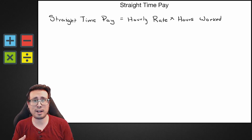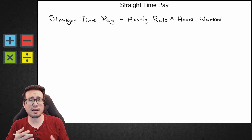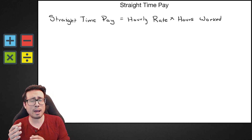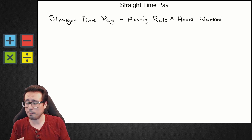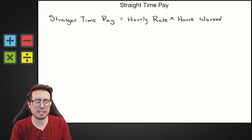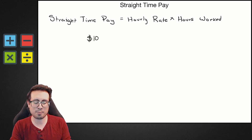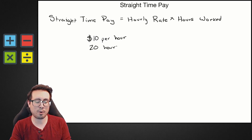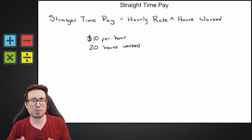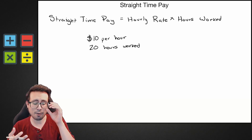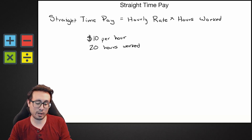It's a very easy concept — it's just a matter of knowing what to plug in where. So let's start with an easy example. Let's say we have a job where we make ten dollars per hour, and this week we worked 20 hours. We want to know: what is our straight time pay, our gross pay before taxes?